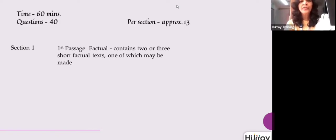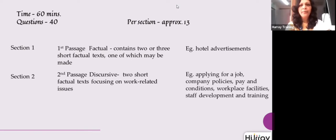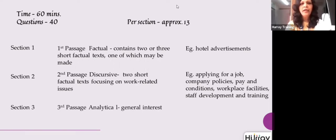The first text is factual information with two or three small factual texts. In section two, this could be on hotel advertisements, etc. Section two will be a discursive topic with factual texts, mostly related to work and employment — for example, applying for a job and company policies. Section three will be more analytical and the topic will be of general interest. This is how a general training paper would look.